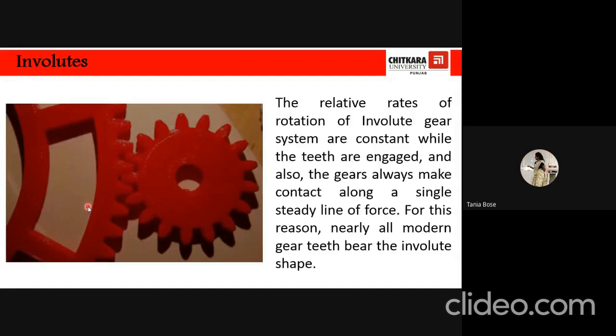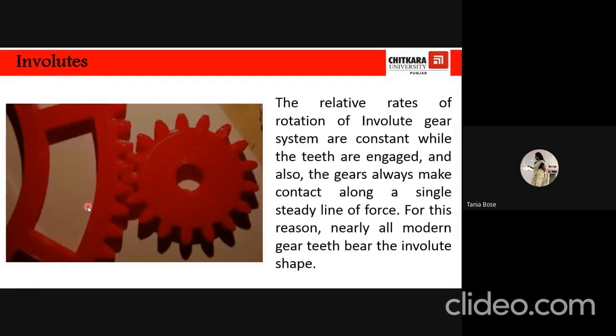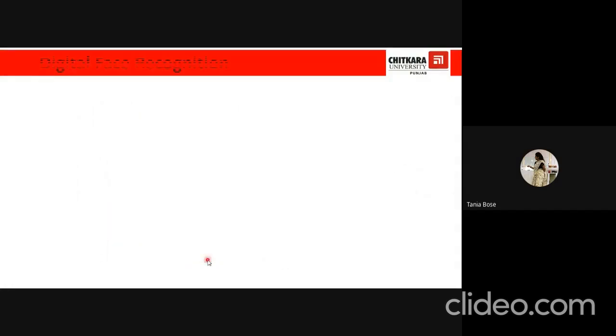Involutes. This is a gear system. The involute has some properties that makes it extremely important to the gear industry. If two intermeshed gears are keyed with the profile shape of involutes, they form an involute gear system. The relative rates of rotation are constant while the teeth are engaged and also the gears always make contact along a simple steady line of force. With teeth of other shapes, the relative speeds and forces rise and fall as successive teeth engage resulting in vibration, noise and excessive wear. For this purpose, nearly all modern gear teeth wear the involute shape. So nowadays, the gear industry they are moving on to this shape for the smooth conduct.